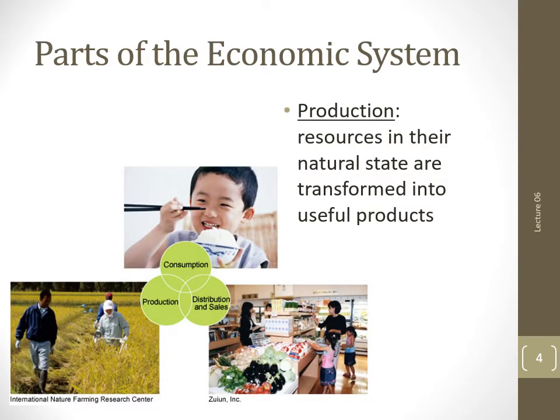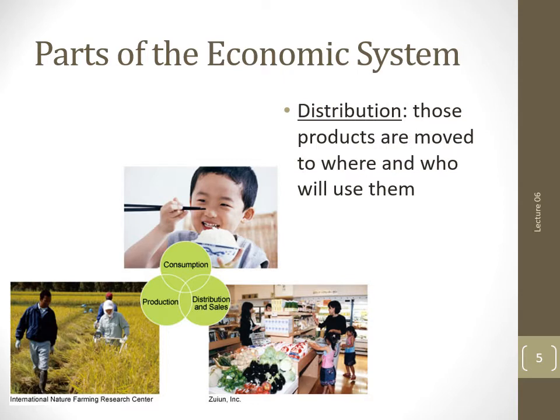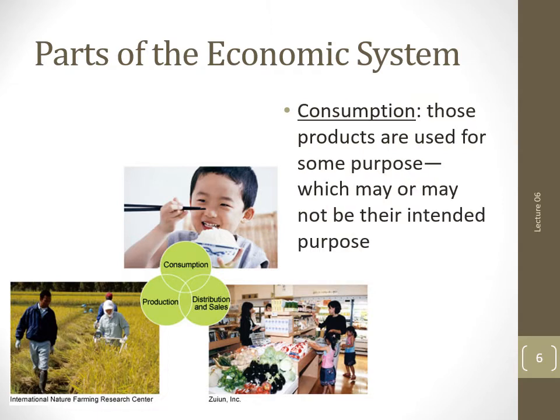An economy has three phases. Production, when resources in their natural state are transformed into useful products. Distribution, when those products are moved to where and who will use them. And consumption, when those products are used for some purpose, which may or may not be their intended purpose. We'll examine each phase of economic activity in turn.